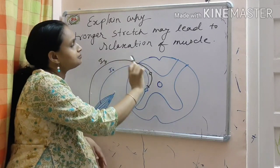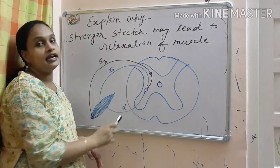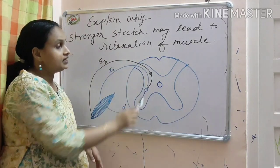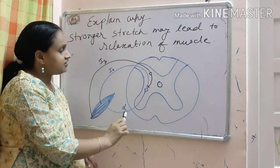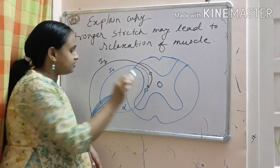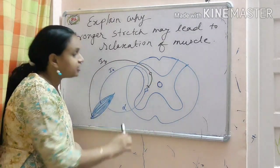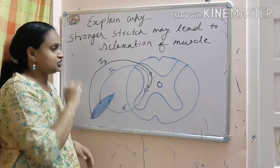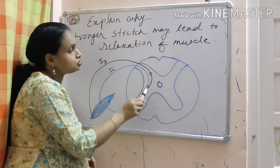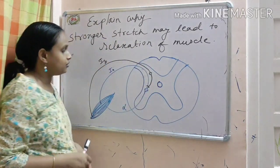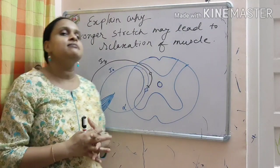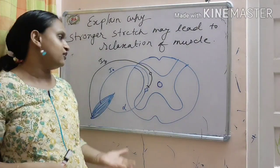These sensory receptors are ending on one interneuron. And this interneuron is inhibitory. So, it is giving negative feedback to the alpha neuron, leading to relaxation of the muscle. This neuron stimulates alpha neuron. And this pathway inhibits alpha neuron. And when alpha neuron is inhibited, there is relaxation of the muscle.